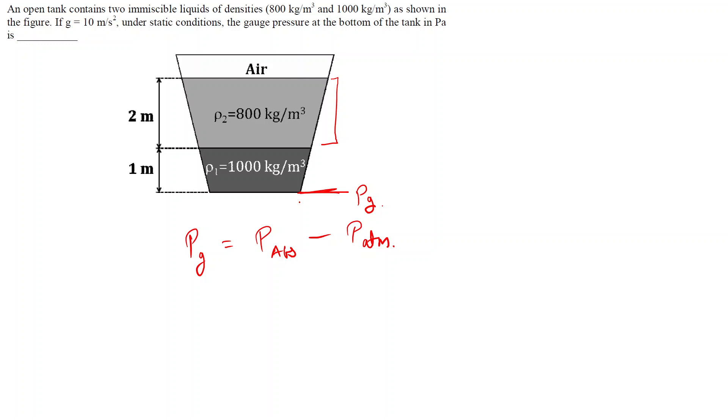The absolute pressure at this point at the bottom will be due to the atmospheric pressure that is acting, that is P_atm, and the pressure due to both of the liquids. So that will become P_absolute = P_atm